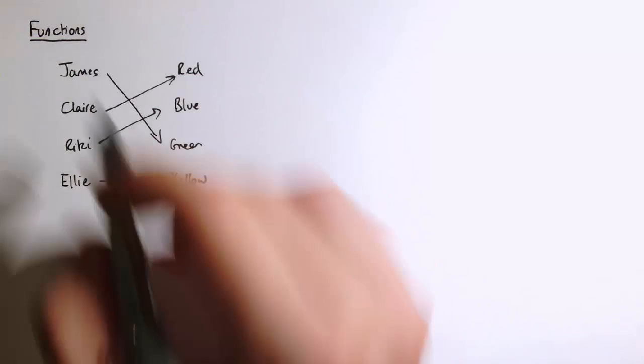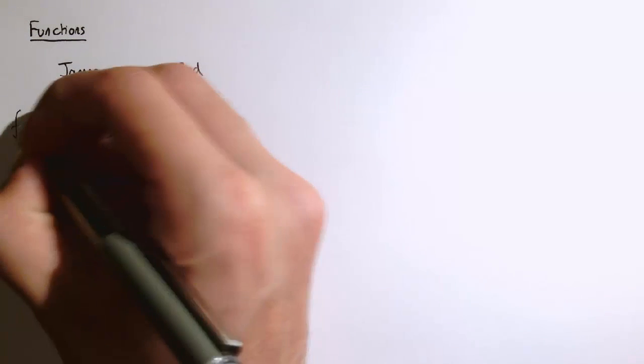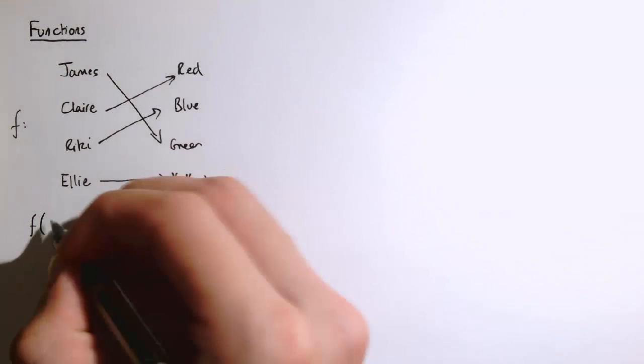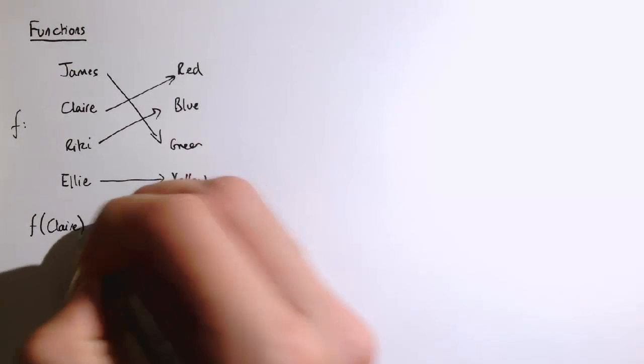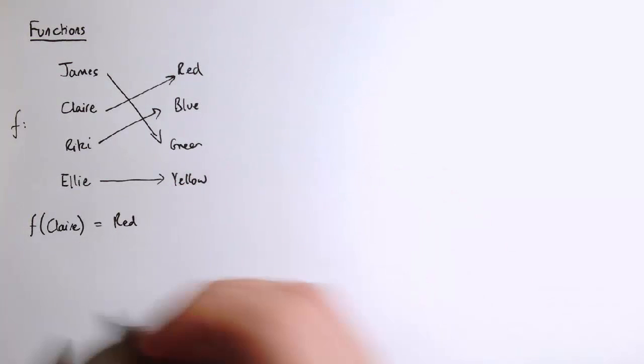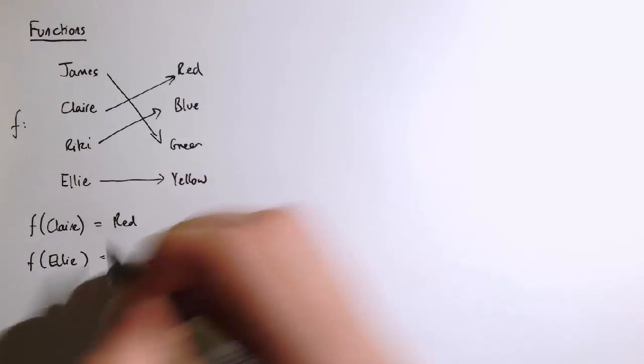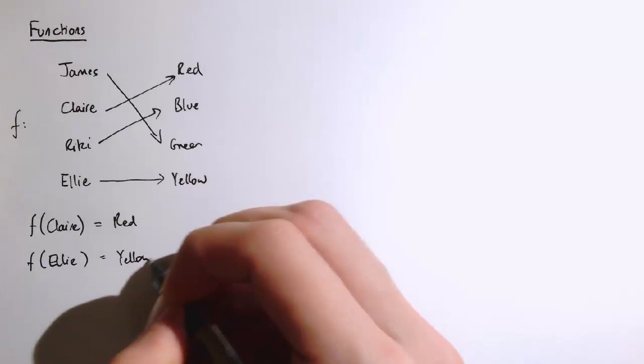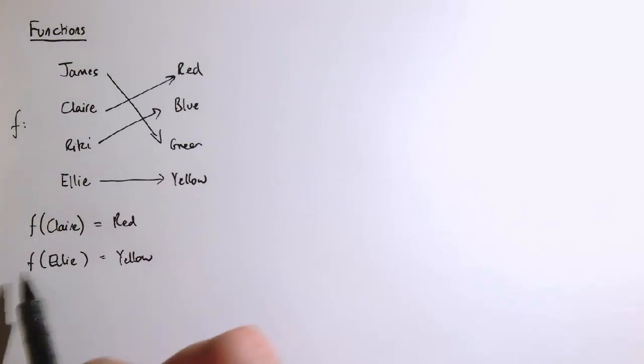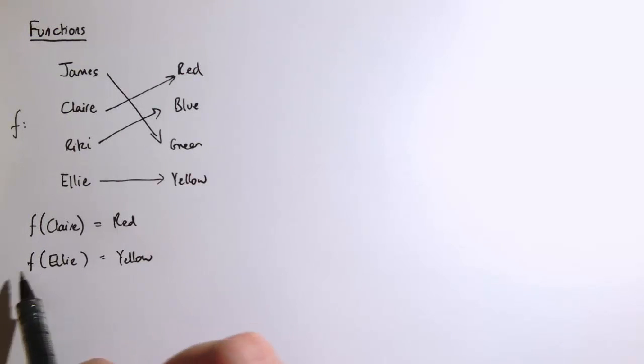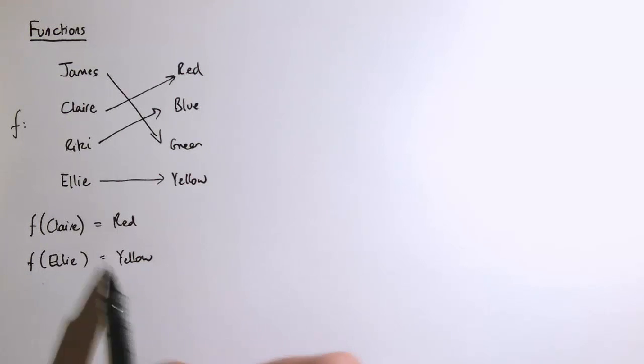And the function then is actually this rule that maps the people to their colours. If I called the function f, you might say that f of Claire is red. You could say that f of Ellie is yellow because when I essentially apply this function f to Ellie I get yellow.